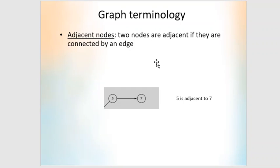The first term is adjacent nodes. Two nodes are adjacent if they are connected by an edge. In this example, 5 and 7 are two vertices connected using an edge. Therefore, 5 is adjacent to 7.